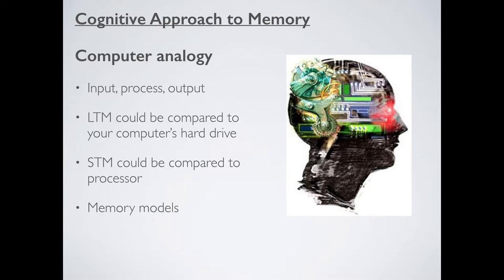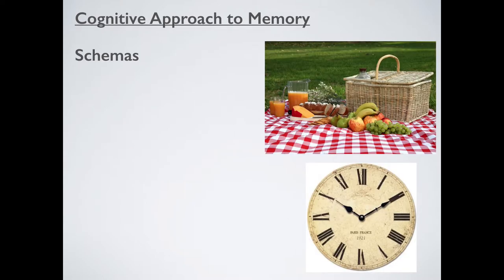One of the benefits of using the cognitive approach into studying memory is that we can build what are called memory models. We won't explore memory models too much in this video — we'll save it for a future one. But basically, a memory model is a framework for understanding what memory can do and ultimately how it works. We couldn't do that in any of the other approaches, so that's one of the biggest benefits of using the cognitive approach to explain memory.